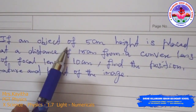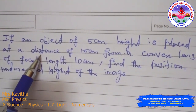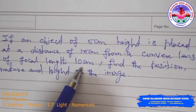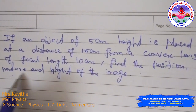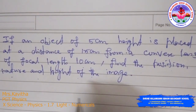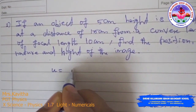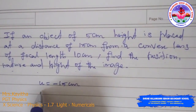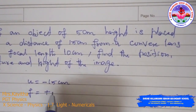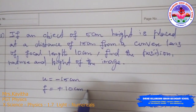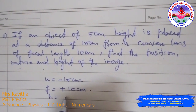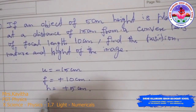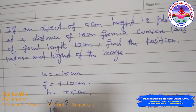Next: an object of 5 cm height is placed at a distance of 15 cm from a convex lens of focal length 10 cm. Find the position, nature, and height of the image. Using sign convention: U = −15 cm, F = +10 cm (convex lens), and object height H = +5 cm. We need to calculate V and image height H′.